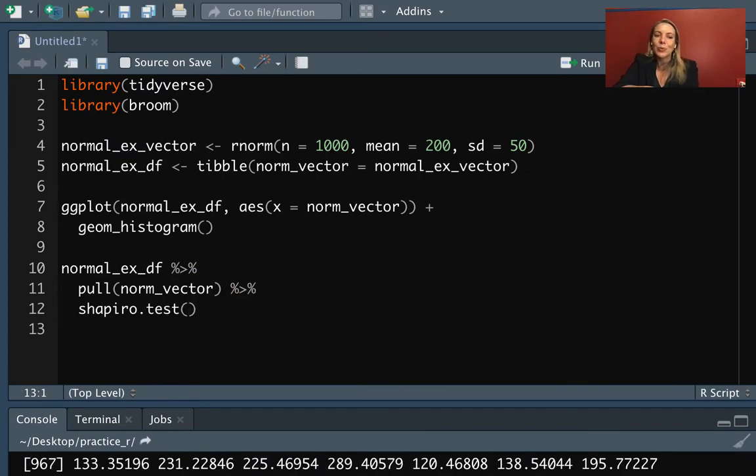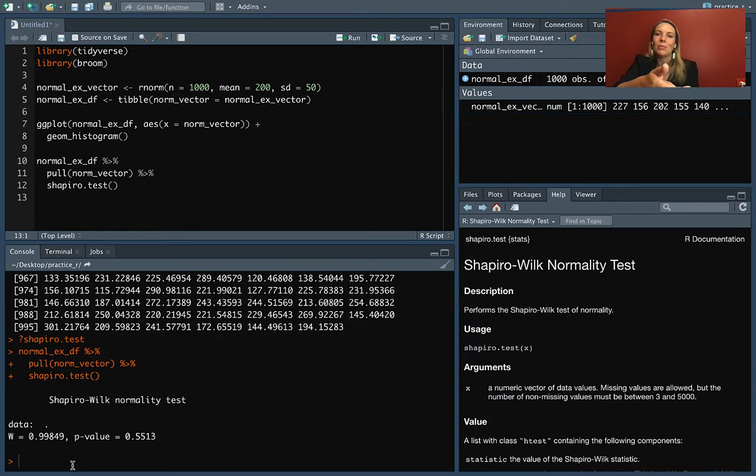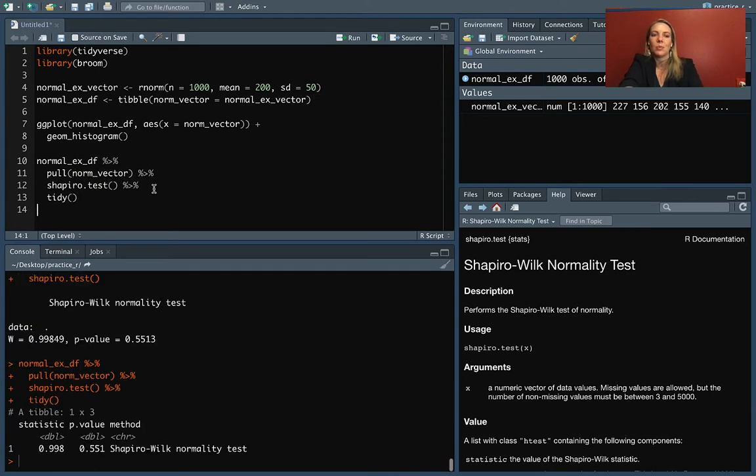So we can pipe this in now, we get that nice printout, but something that might not be particularly useful to include later in a pipeline. And so as a last step here, we can do tidy from the broom package and that gets things back into a table, even if it's a small one of just one row where we have this in a format where we really know what to do with it.